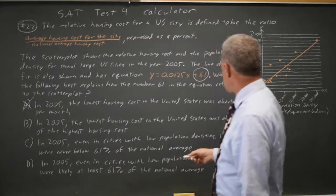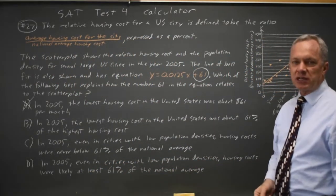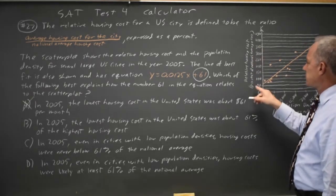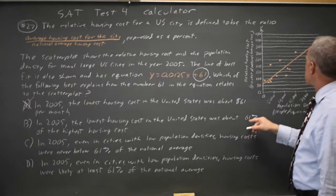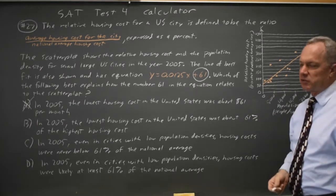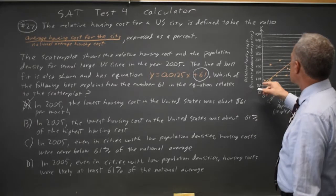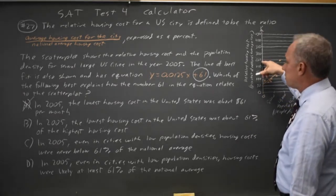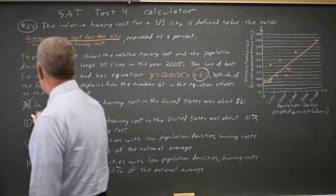Choice B interprets this as a percent of the highest housing cost. But this is a percent of the national average cost. So D is not correct because the highest is up here at 400, and we are not 61 percent of 400. That would be about 240-ish up here. So choice B is not correct.